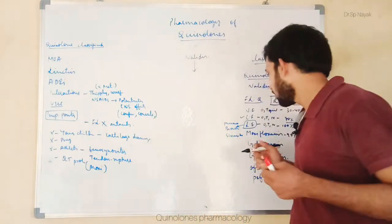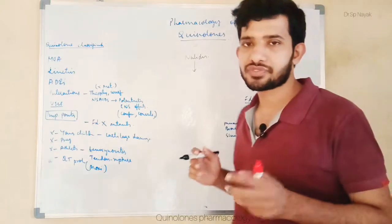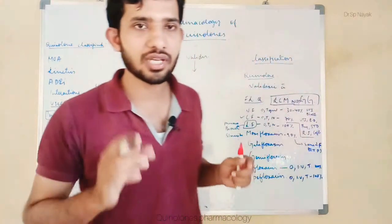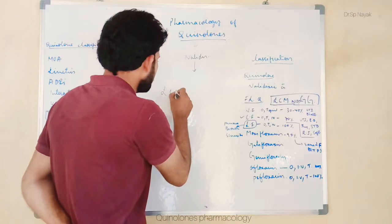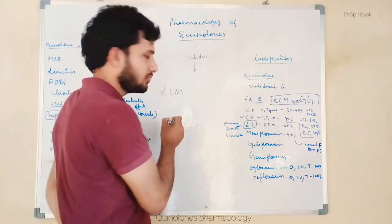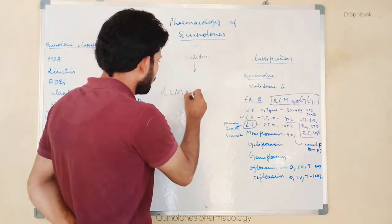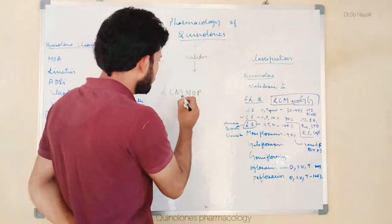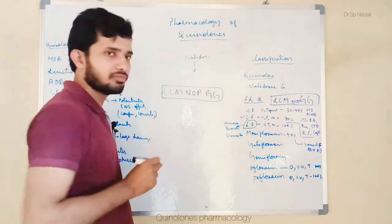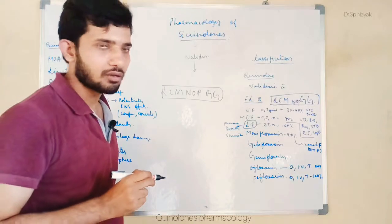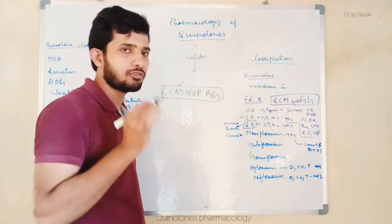Now we will see the different classifications of fluoroquinolones. Just remember the classification as LCM, then N, O, P, and GG. This is the word you can remember for the classification of fluoroquinolones.